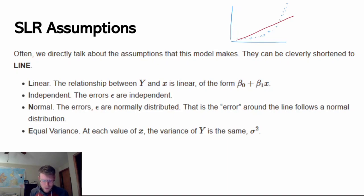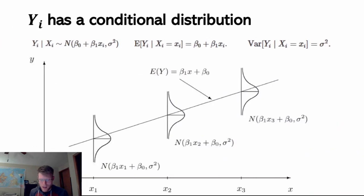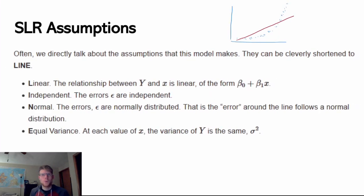Third, the errors should be distributed normally at any given x value. That's what we talked about earlier — we're assuming the distribution of y at any given x value is centered at some point around the line and distributed normally around it. That is just an assumption the linear model makes.